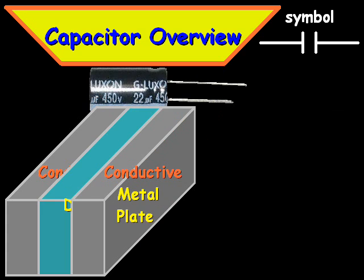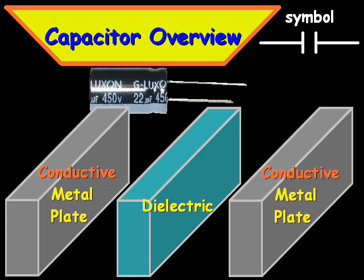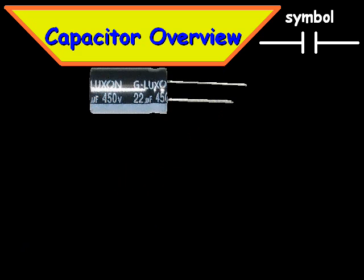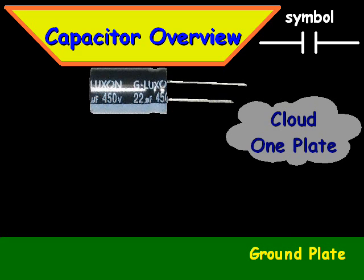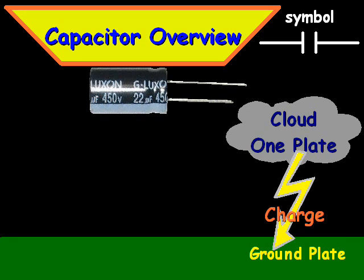Now this dielectric or insulator can also pass a small amount of leakage current — it will pass current but not the actual electrons — and it has an electrical field strength limit better known as breakdown voltage. In nature you can think of it as a cloud as one plate, the ground as another plate, and the charge between them, which is also referred to as lightning.